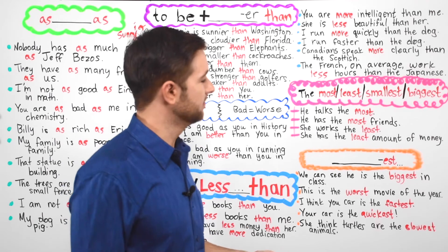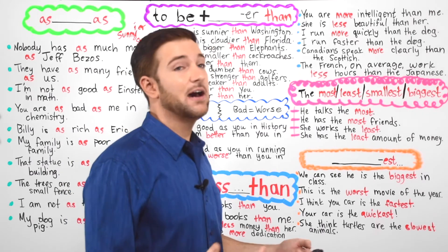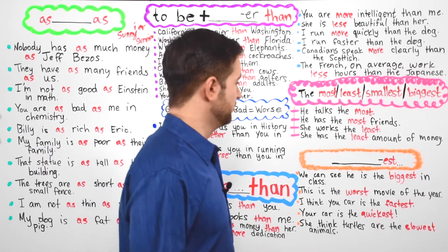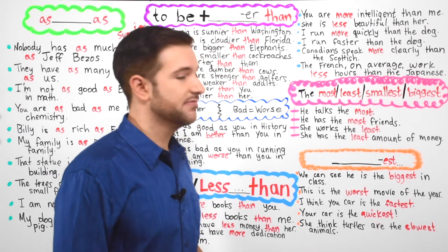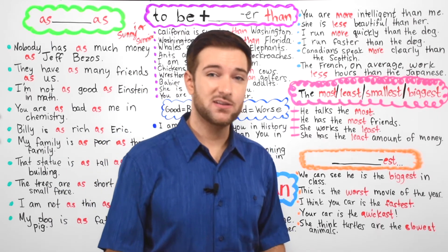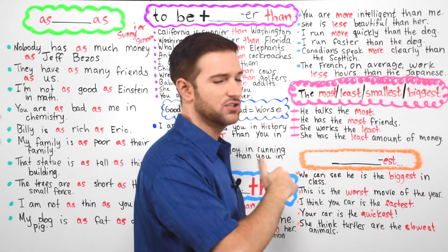He talks the most. Nobody talks as much as him. He has the most friends. He has a thousand friends. I only have two. She works the least. She has the least amount of money. So you can see those examples here with the most, the least, smallest, biggest. You can use them all.